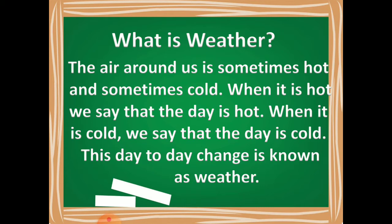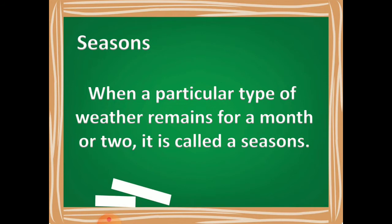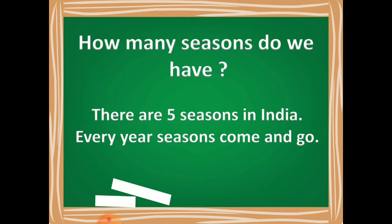Now let us see what is seasons. When a particular type of weather remains for a month or two, it is called seasons. We got to know that weather is the day to day changes of the air around us. The same way, seasons are when the weather remains for a month or two. There are five seasons in India and every year the seasons will come and go.